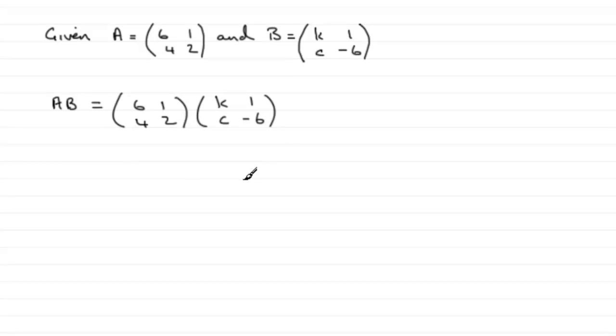And then all we need to do is rows times columns. So if we do first row times first column, we've got 6 times K plus 1 times C, and that's going to give us 6K plus C.